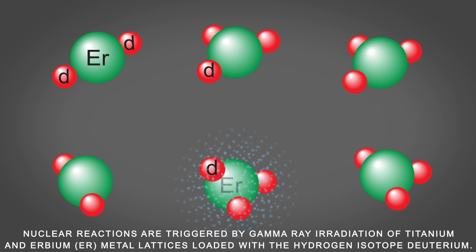Nuclear reactions are triggered by gamma ray irradiation of titanium and erbium metal lattices loaded with the hydrogen isotope deuterium.